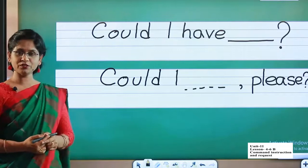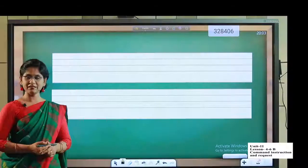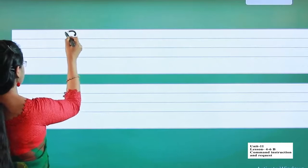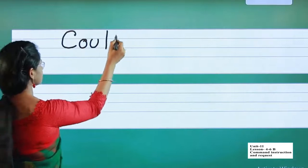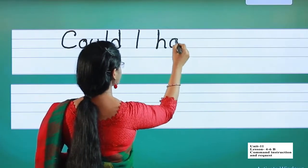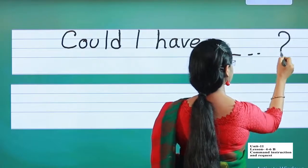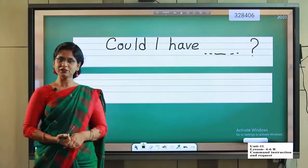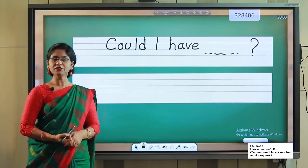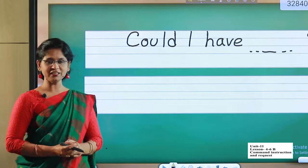When we convert an instruction into a request, we have to use 'please'. Now everyone repeat after me: Could I have? On the blank, you can use a piece of paper, a pen, a pencil, a notebook — anything you want. Then for instruction, to make it a request: Could I, and then the instruction.